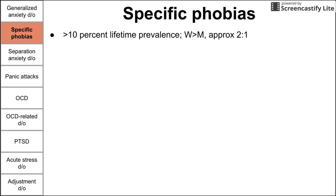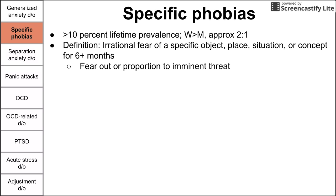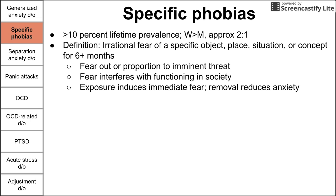Next up is specific phobias. Specific phobias have a lifetime prevalence of over 10%, also more prevalent in women than men, two to one ratio. Specific phobias are an irrational fear of a specific object, place, situation, or concept that needs to occur for at least six months. The fear is described as being out of proportion to an imminent threat — a fear of spiders, for instance, elicits a response way out of proportion to the actual threat. Exposure to the object elicits immediate fear, and removal of it reduces anxiety almost immediately.